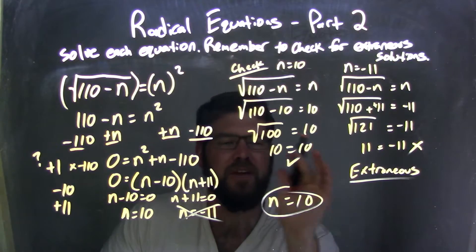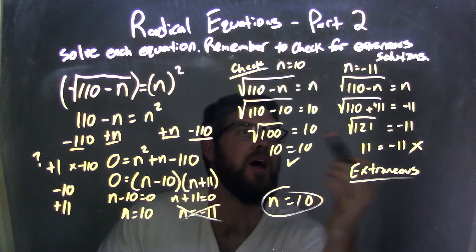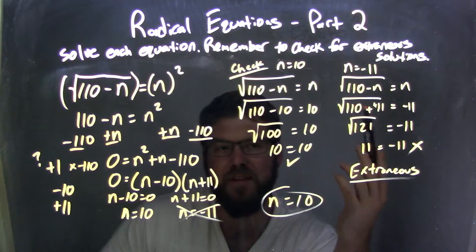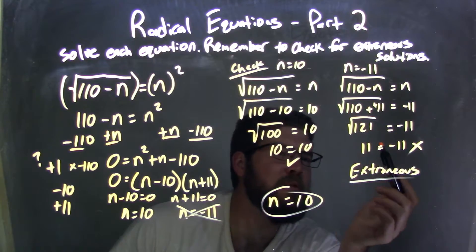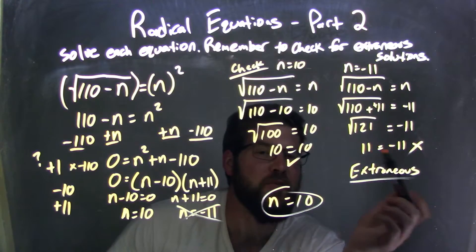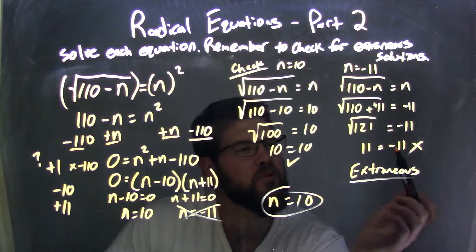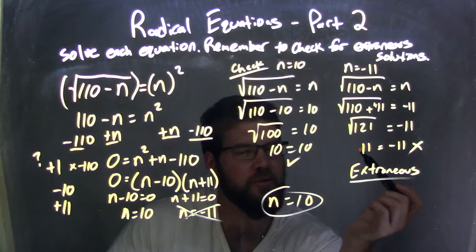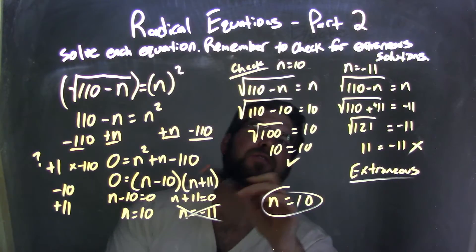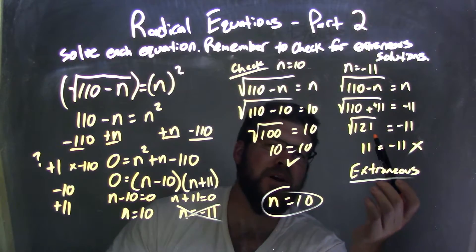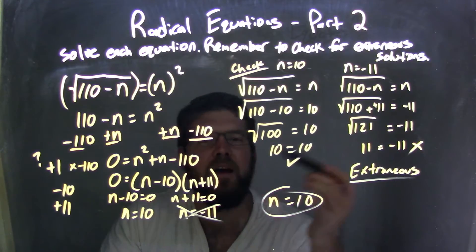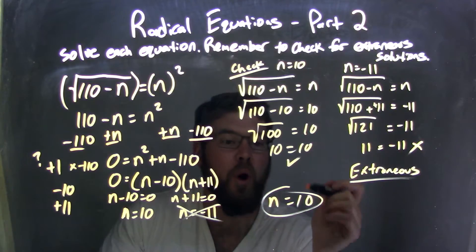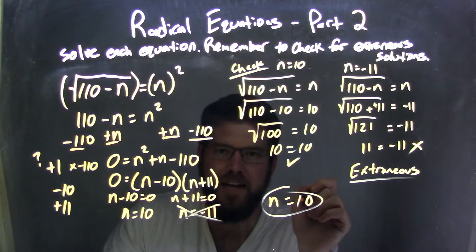Knowing that, n equals 10 is a true statement, we're good, it works here. But when I plugged in n equals negative 11 to our equation here, when I simplified, it was not a true statement. When it's not a true statement, it's an extraneous solution, meaning yes, when we solve it, we get an answer, but when we plug it back in, it's not a true answer. So our only true answer here is n equals 10.